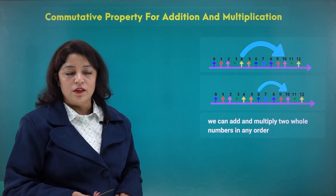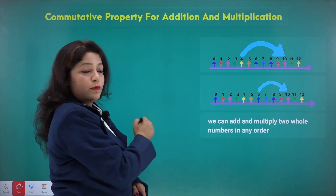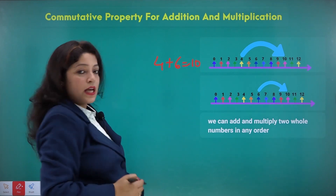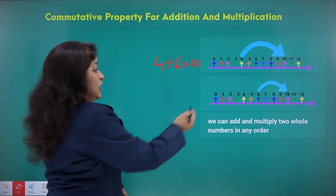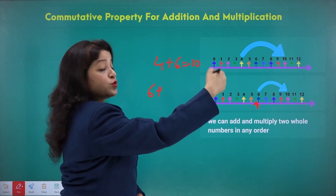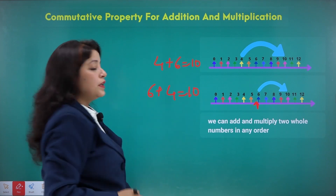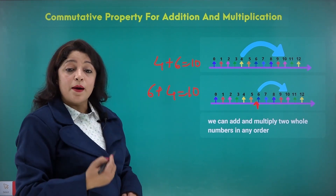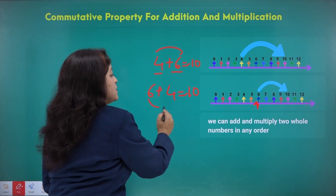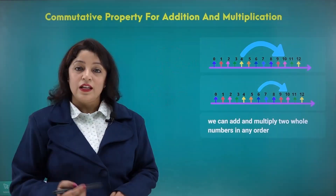Yes, that concludes that we can add and multiply two whole numbers in any order. This means if to 4 I want to add 6, I'll reach 10. Similarly, if I start from 6 and move 4 steps to the right, I will reach 10 again. So we can add numbers in any order: 4 plus 6 or 6 plus 4 gives the same answer.